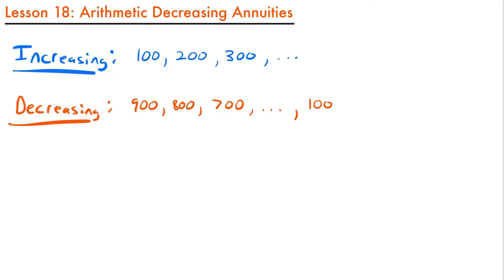In that previous video, we looked at an annuity where the payments formed an arithmetic increasing progression — something like a first payment of $100 where every payment afterwards increases by a set amount of $100. That's different from a geometric progression where payments change by a certain rate or percent. For an arithmetic decreasing progression, we start with some amount and decrease by a particular set amount each time.